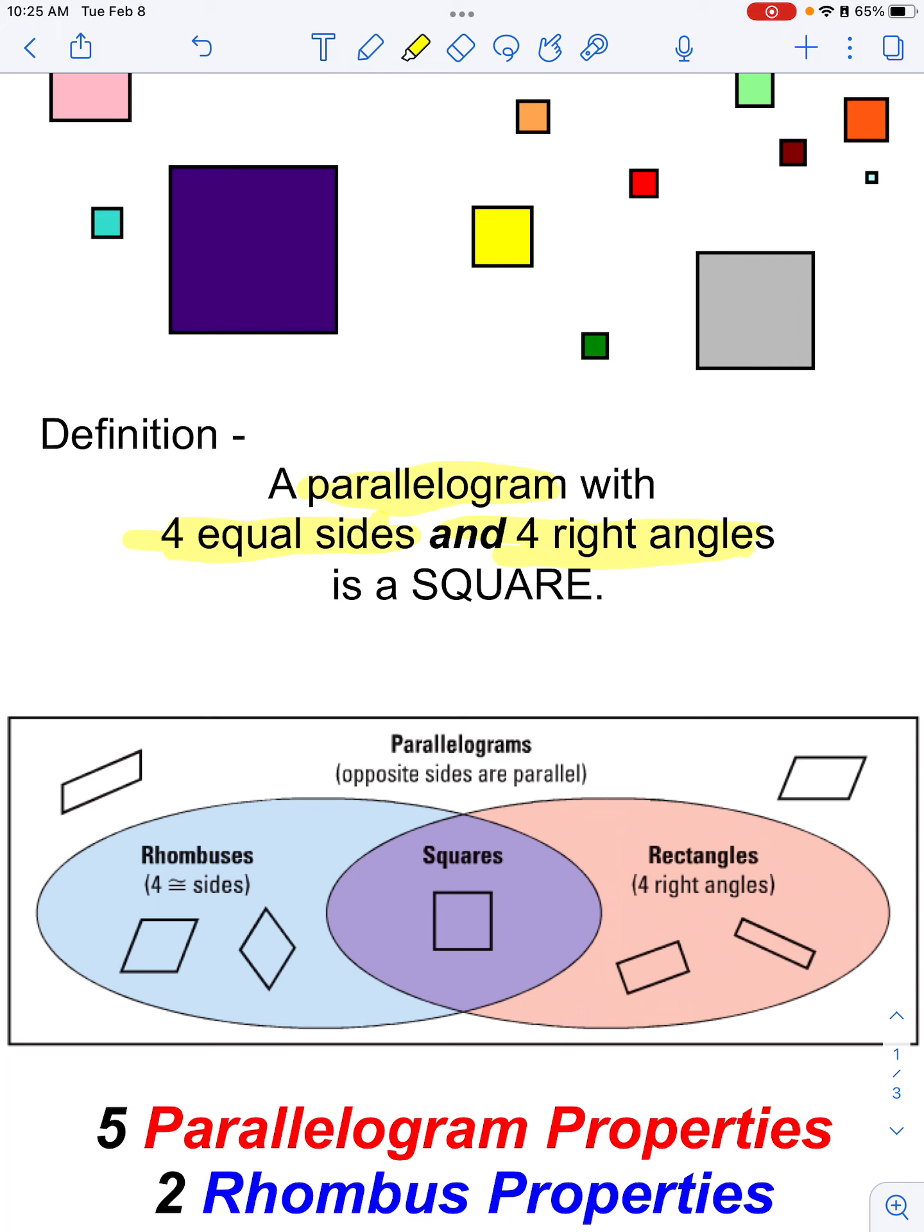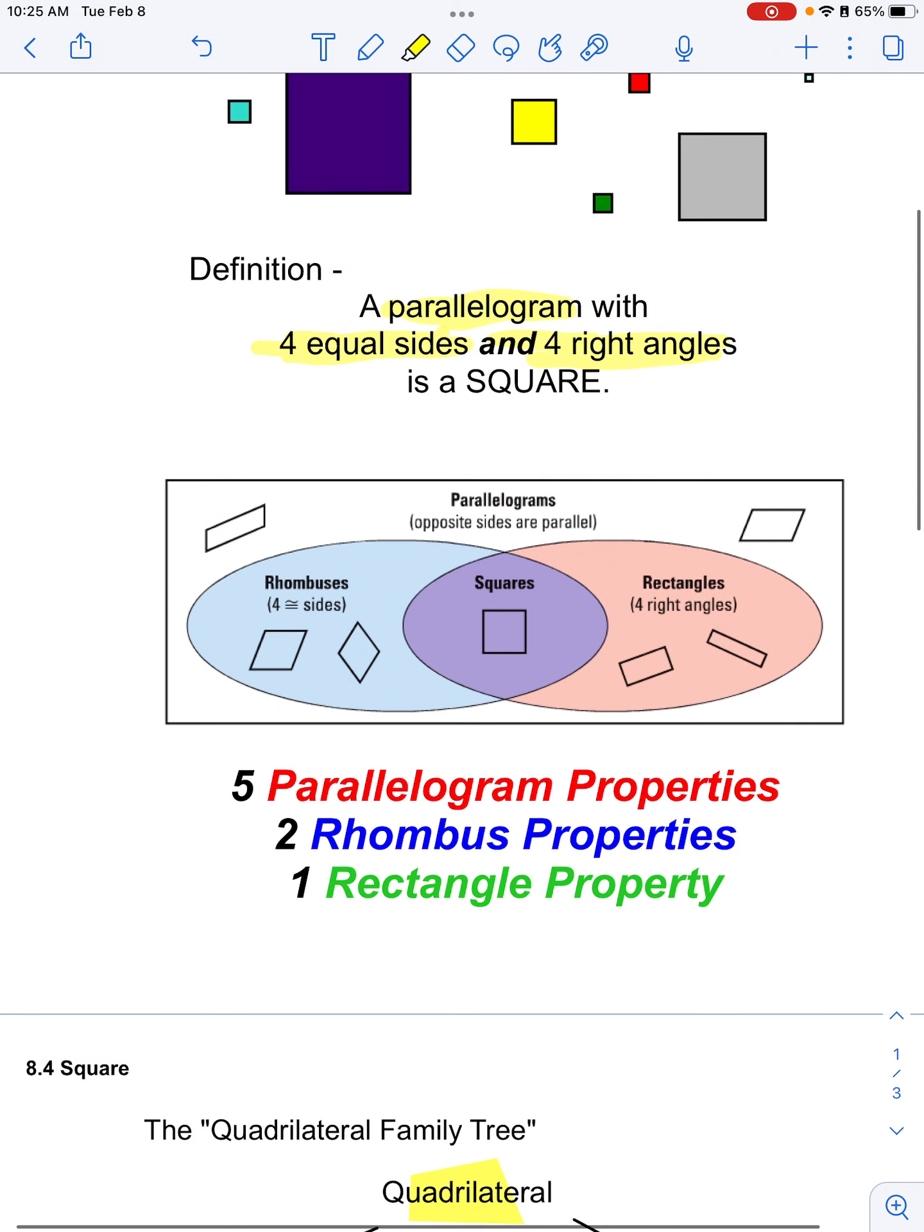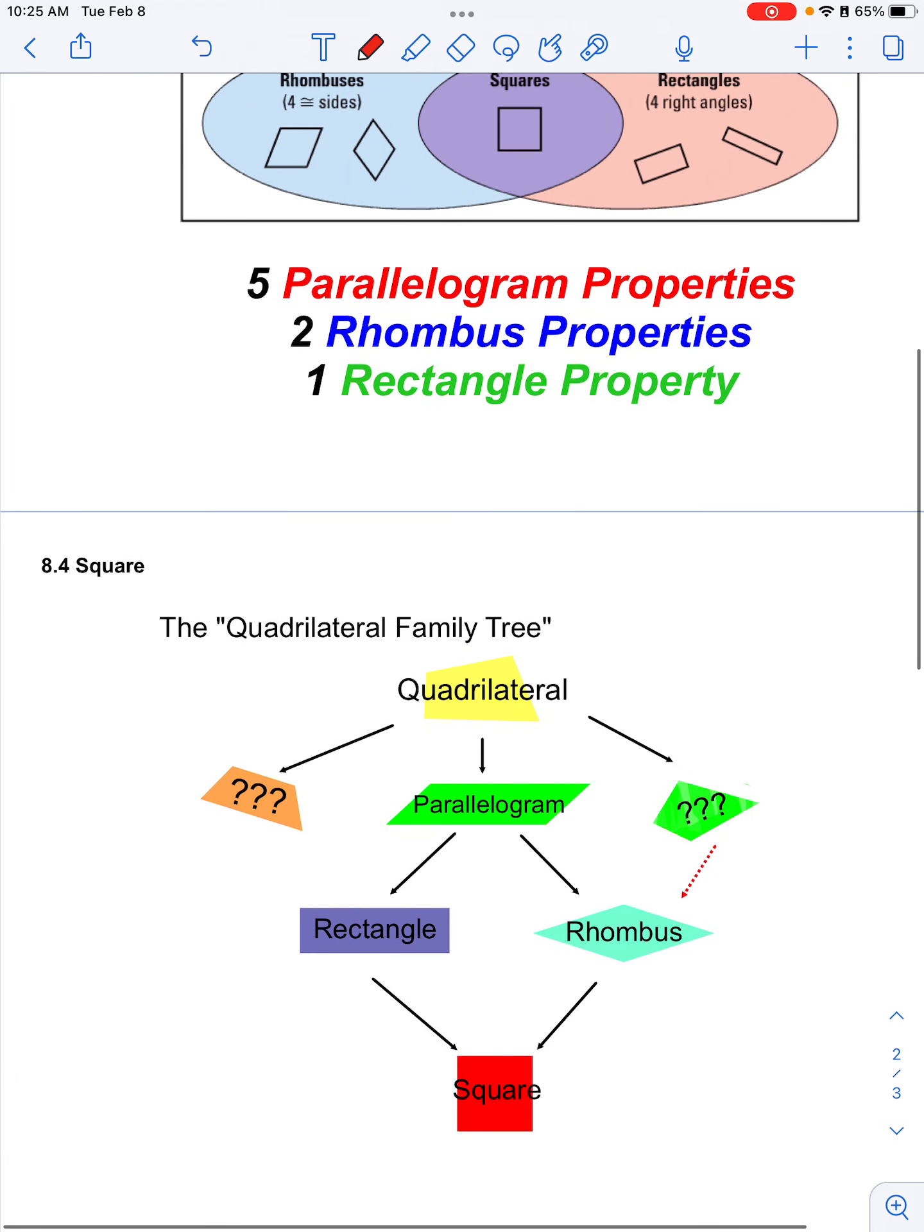So you can see again, kind of like in this graphic here, that the characteristics of a rhombus is that there are four congruent sides, and the characteristics of a rectangle is that there are four right angles. And a square has both of those, so again it fits under the entire umbrella of a parallelogram. It's also a rhombus and it is also a rectangle. So a square wears many hats.